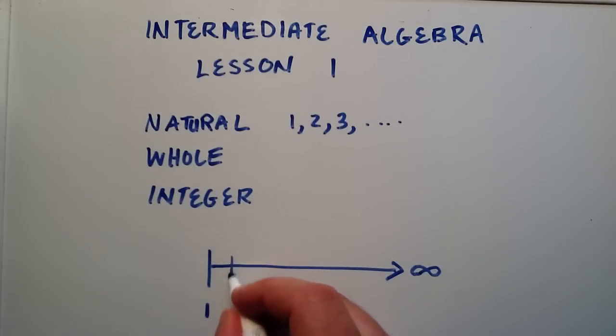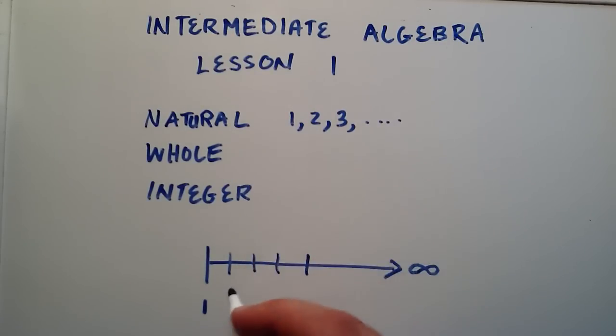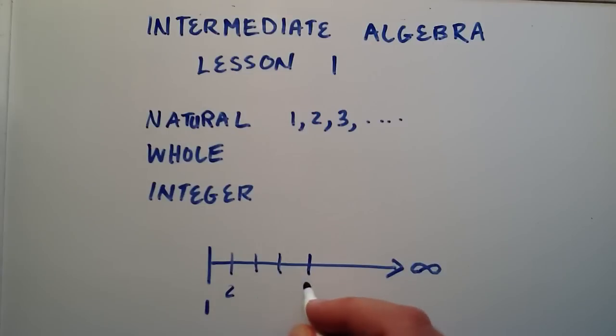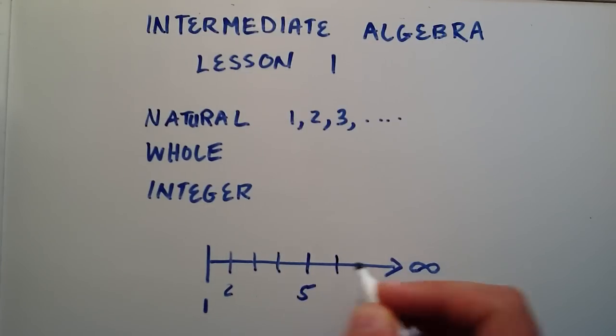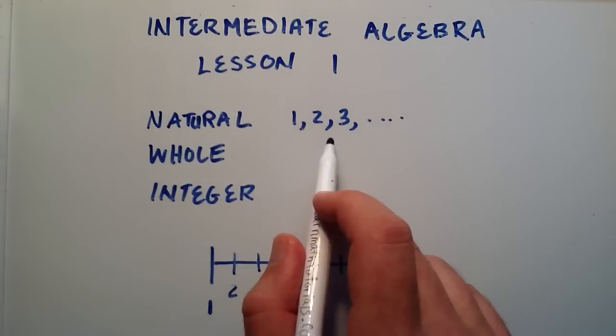And what we're going to do is we're going to put a tick mark every so often. And these tick marks are evenly spaced, and they represent the next number. So this would be the number 2, 3, 4, 5, and so on. And so with a number line like this, we can represent all of the natural numbers.